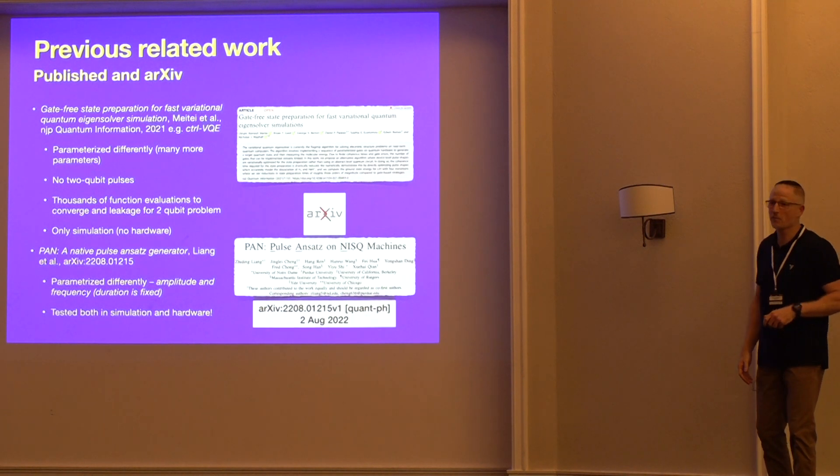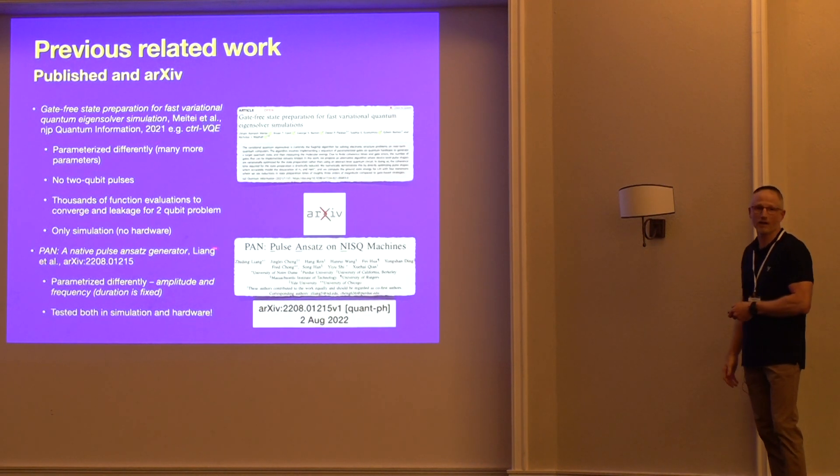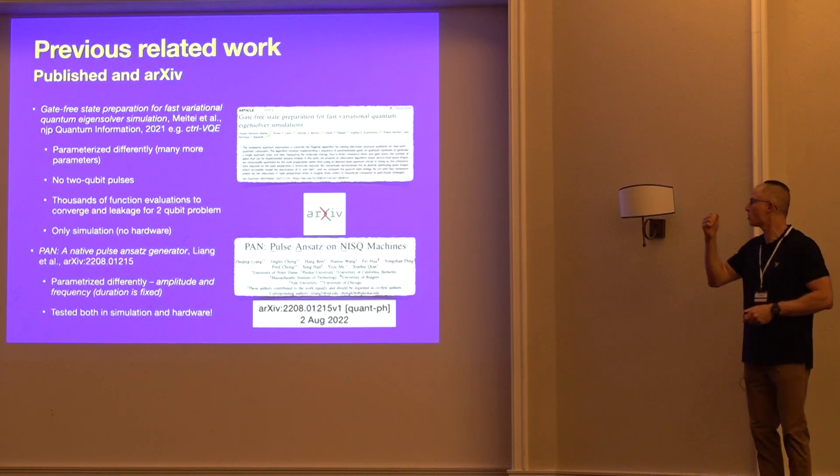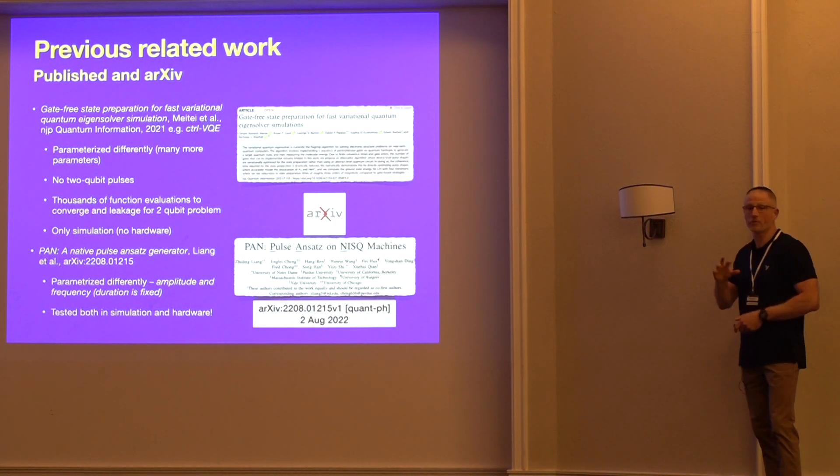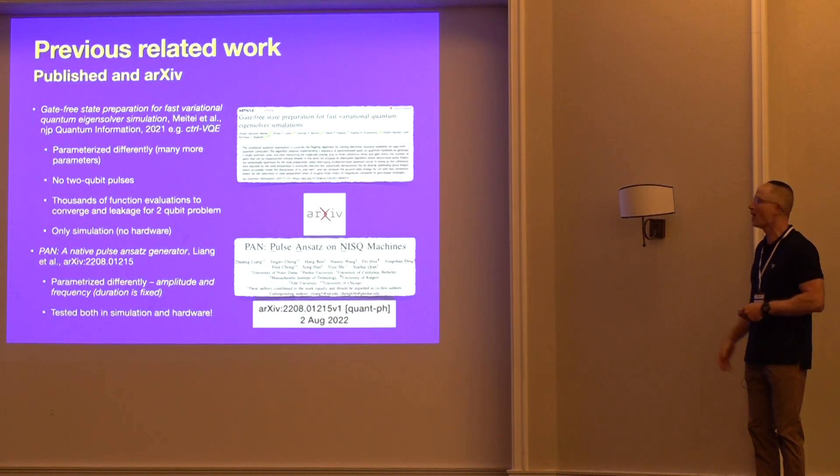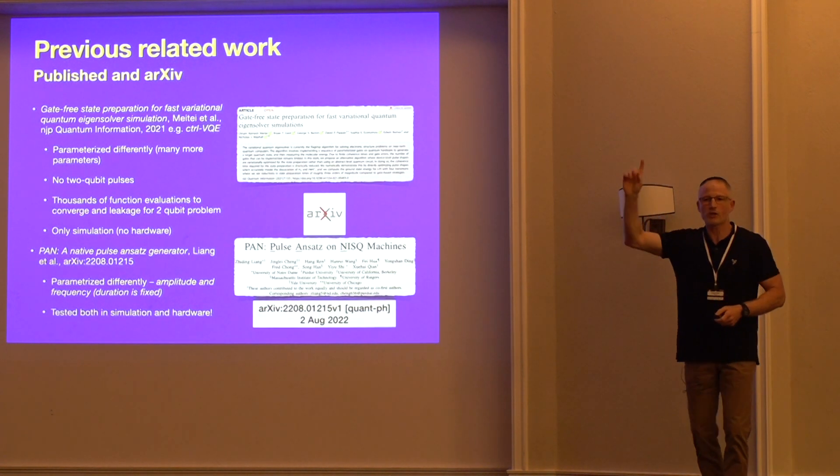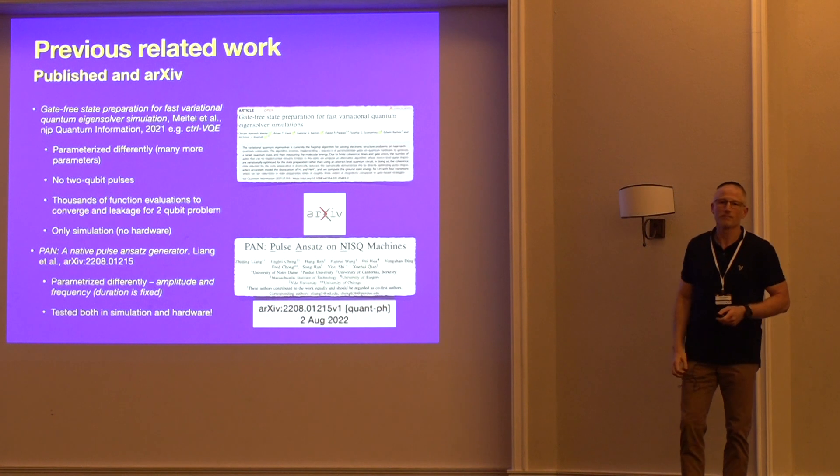And then, of course, as is bound to happen on the arXiv, about a month ago, there was a paper that came out called PAN, Pulse Ansatz on NISQ Machines, by a stellar group of universities collaborating together. They parameterized also differently. They chose amplitude and frequency, and they fixed duration. Too bad for them. They tested in both simulation and limited hardware runs. So we'll be comparing to both of these results later on. But I have a question for you. Did anybody check the arXiv this morning?